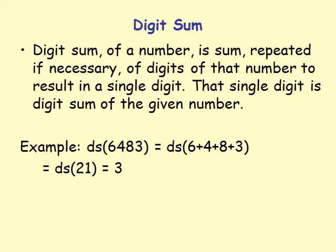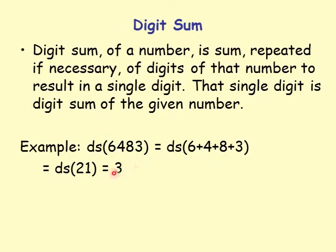Example: the number 6483. We add the digits: 6 plus 4 plus 8 plus 3. 6 plus 4 is 10, plus 8 is 18, plus 3 is 21. Since 21 is not a single digit, we repeat: 2 plus 1 equals 3. So the digit sum of 6483 is 3.